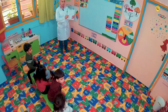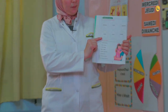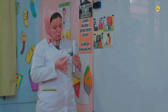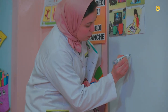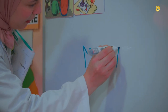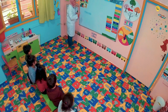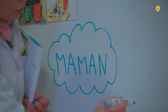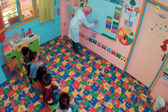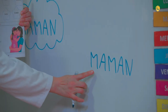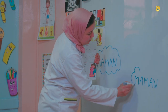Dans l'étape de l'exploitation, l'enfant va apprendre quelques appellations familiales. Les enfants, suivez avec moi. Je vais écrire au tableau le mot « maman ». Regardez comment j'écris « maman » : M-A-M-A-N. Maman. Ça commence par la lettre « m ». Maman. Voilà.